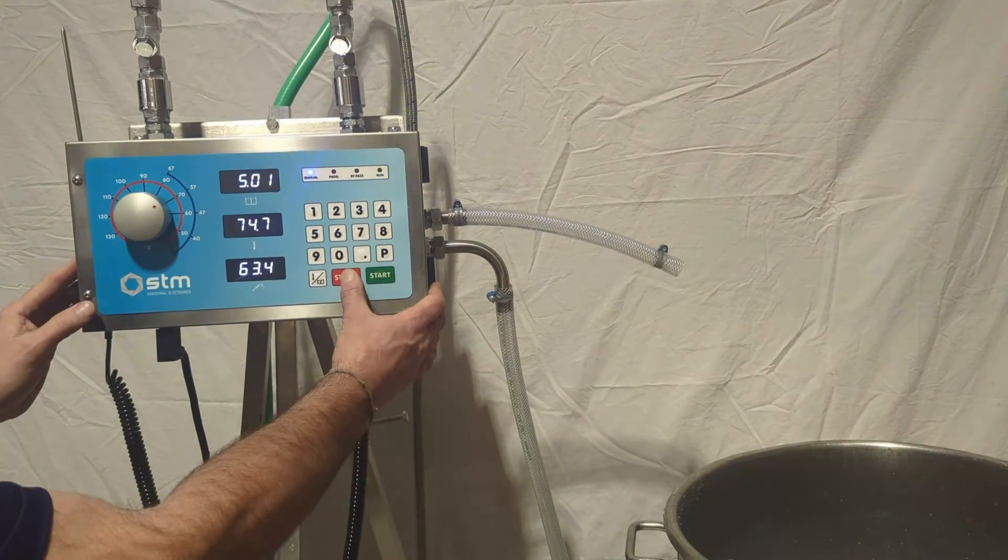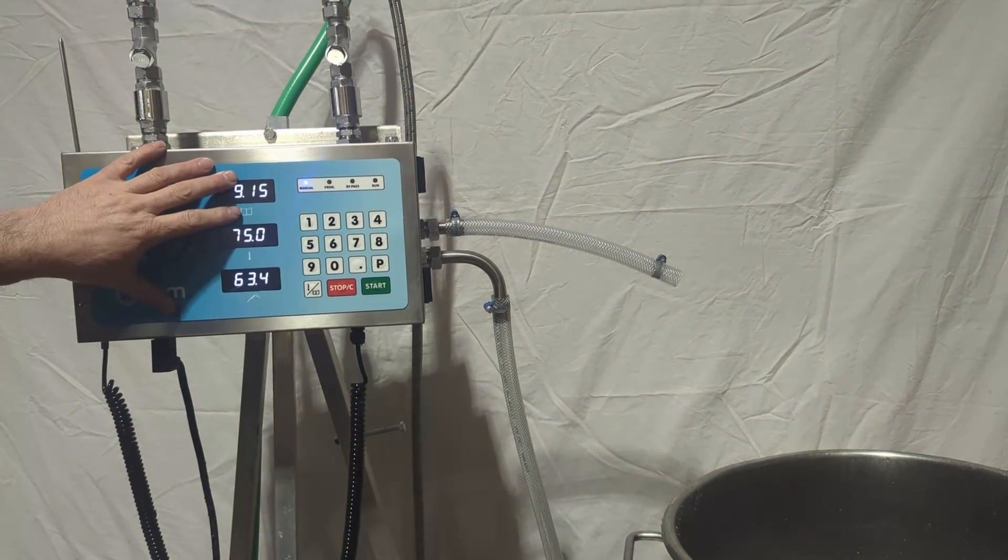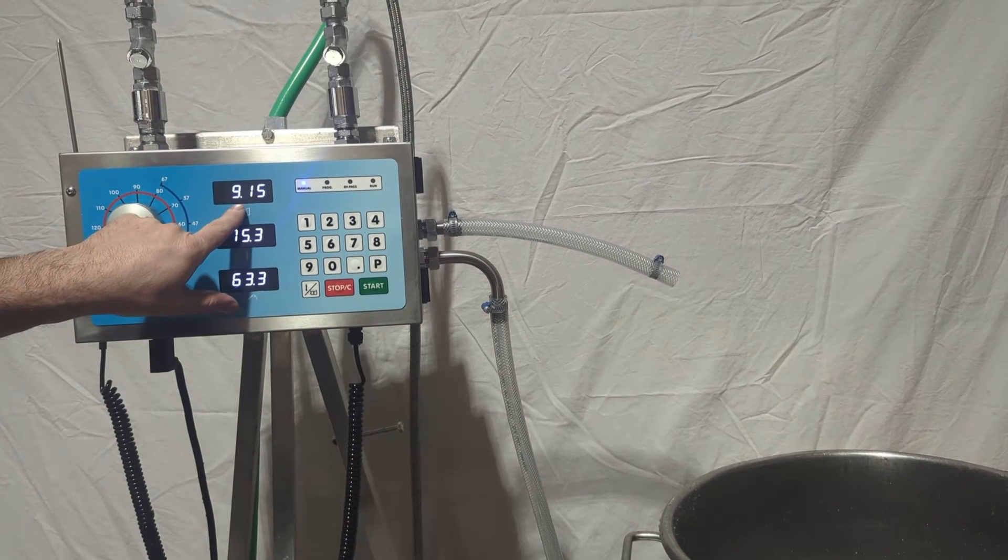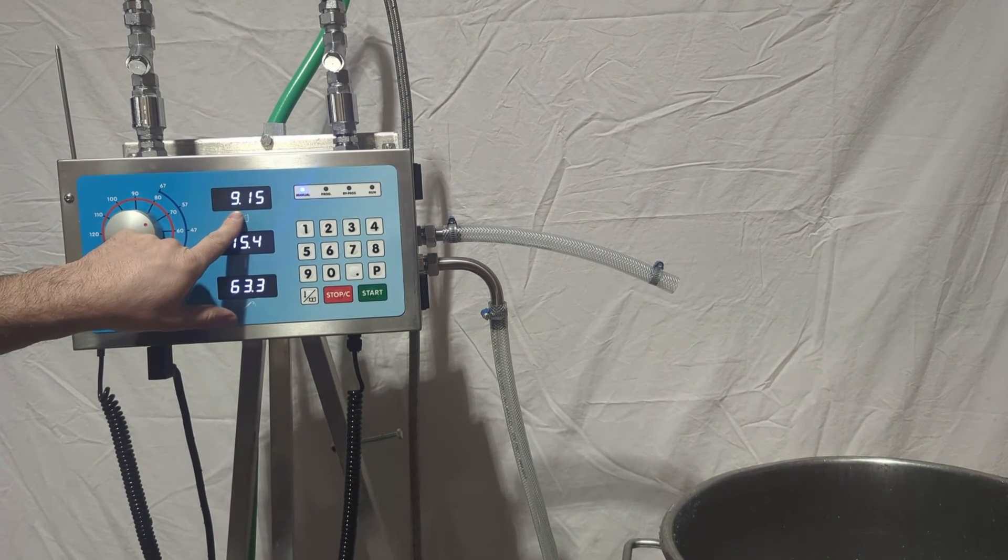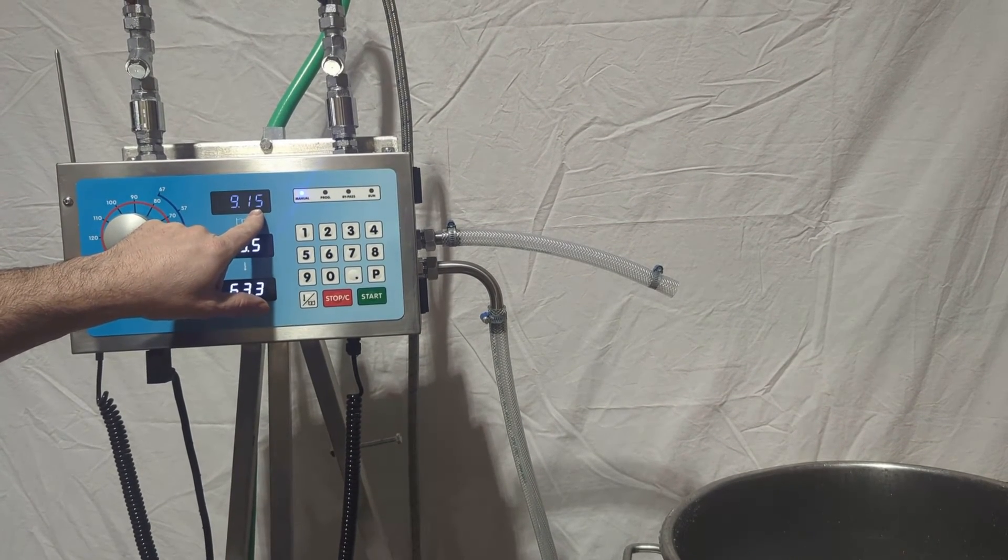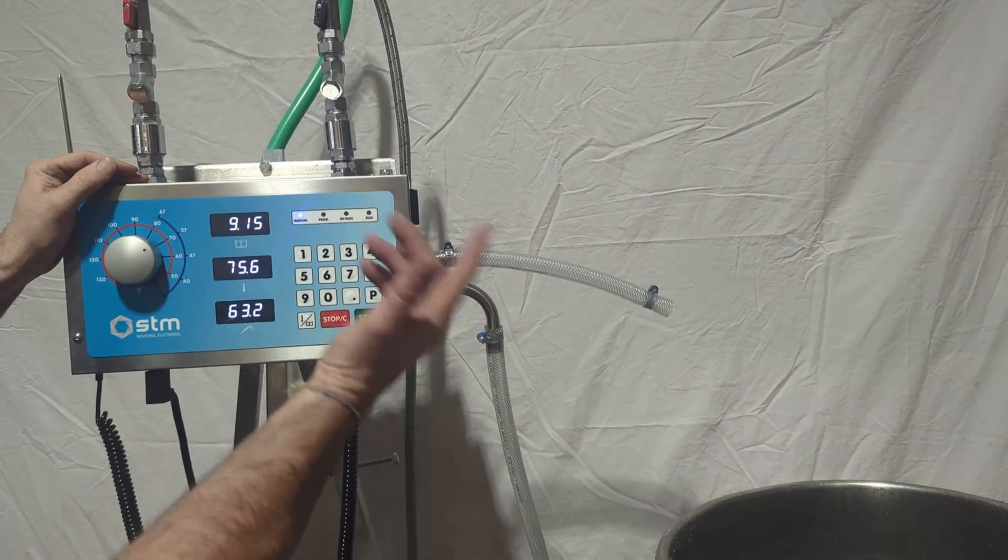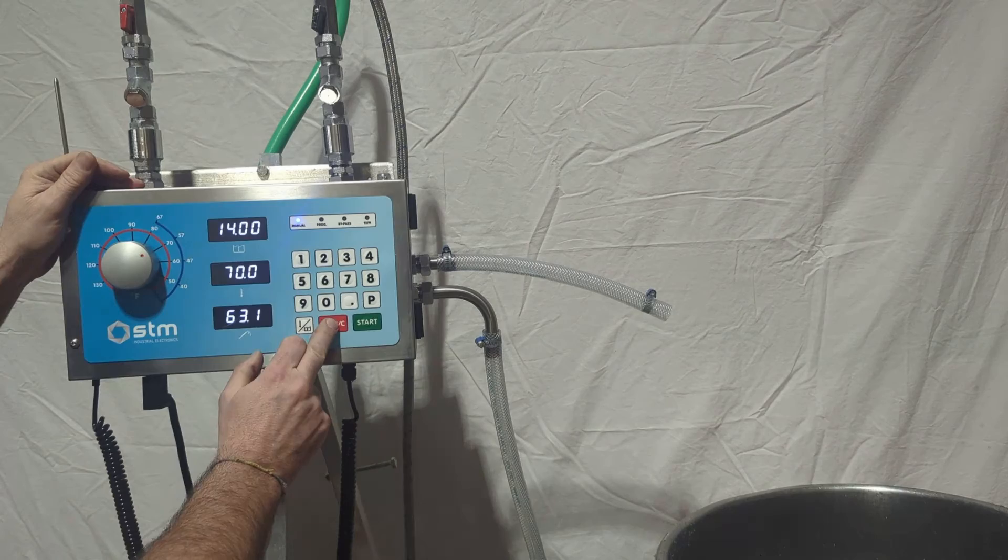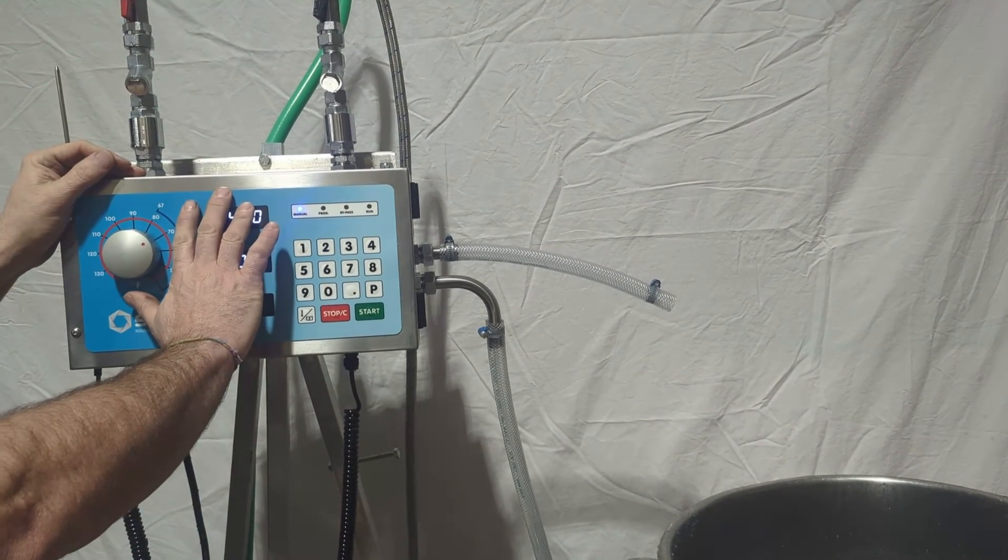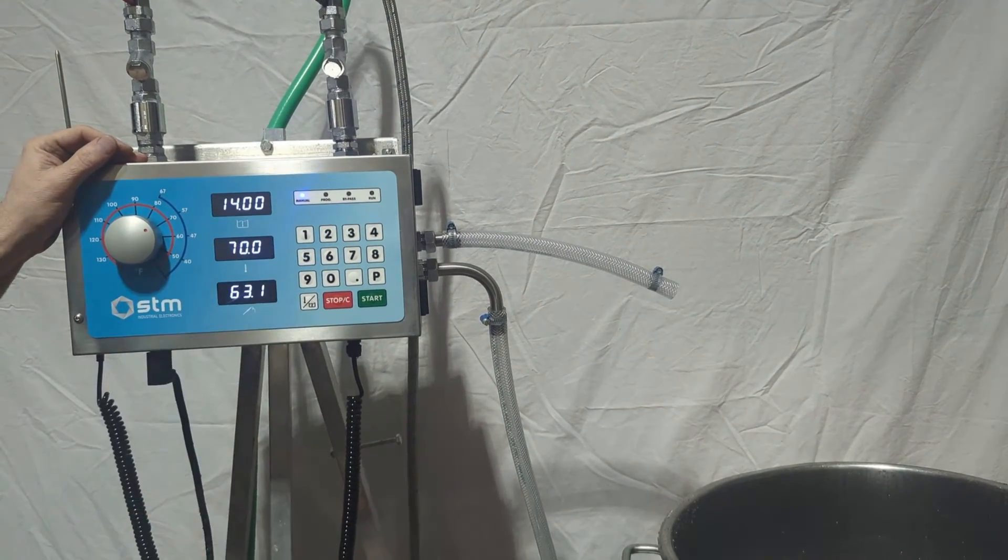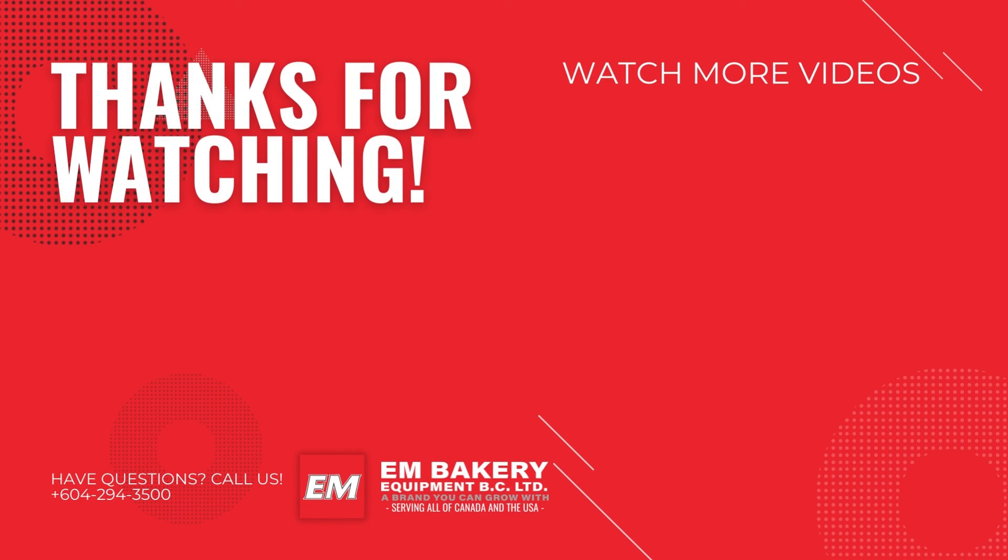If you press stop once, it'll pause the outfeed, and it will let the operator know we've dispensed 9 pounds and another remaining in ounces. And we can start again, and it will continue to dispense. If we press stop twice, it completely resets the unit back to our original settings. Thanks for watching.